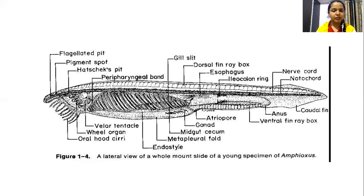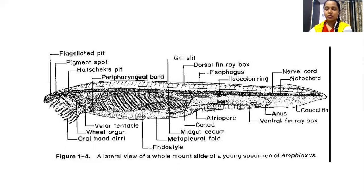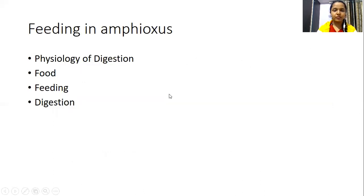They also have apertures: on the anterior end of the body towards the ventral side, they have the oral hood, which is a mouth-opening-like structure — a feeding aperture. At the posterior terminal end, towards the caudal fin or ventral fin, we can see the atriopore, which helps for the ejection of the water that has come through the mouth structures. These are the main morphological features of the amphioxus.